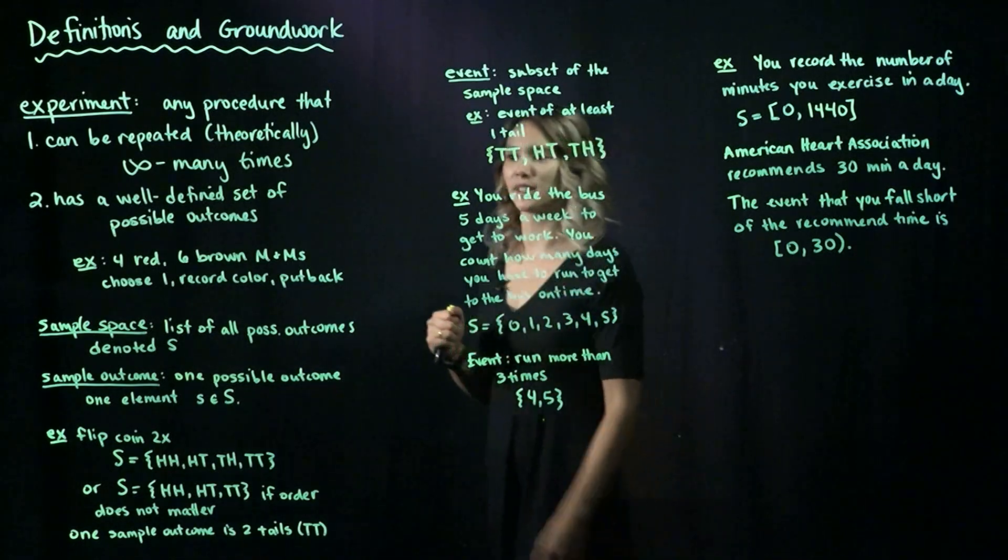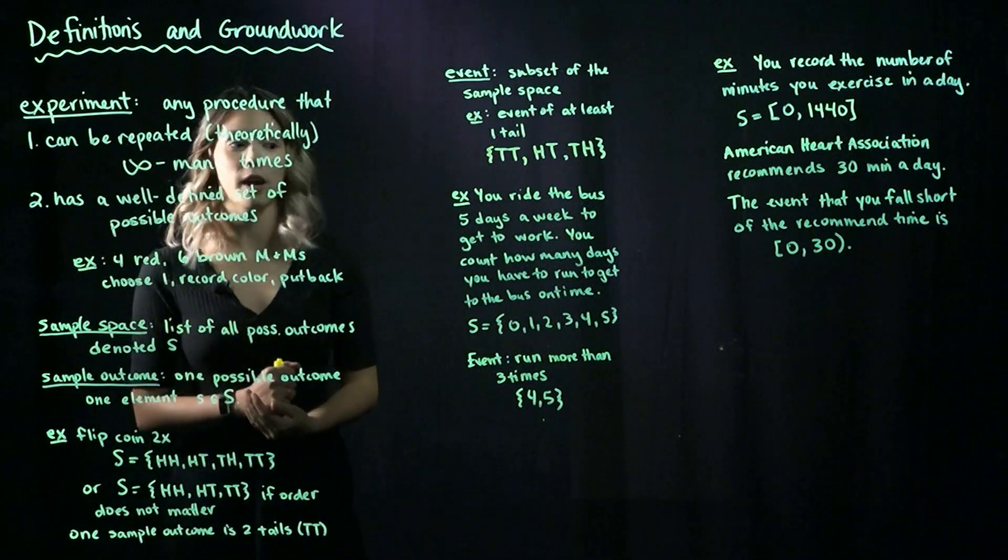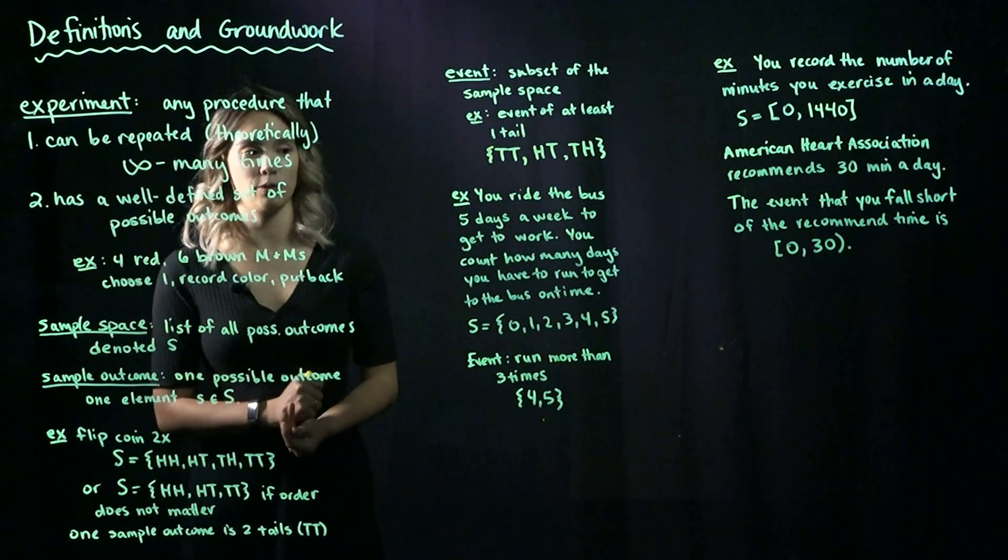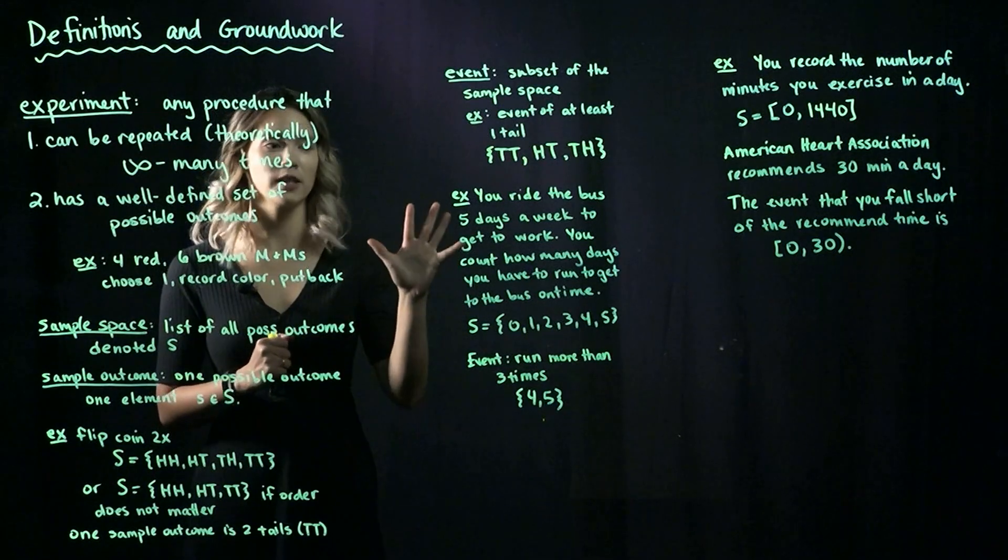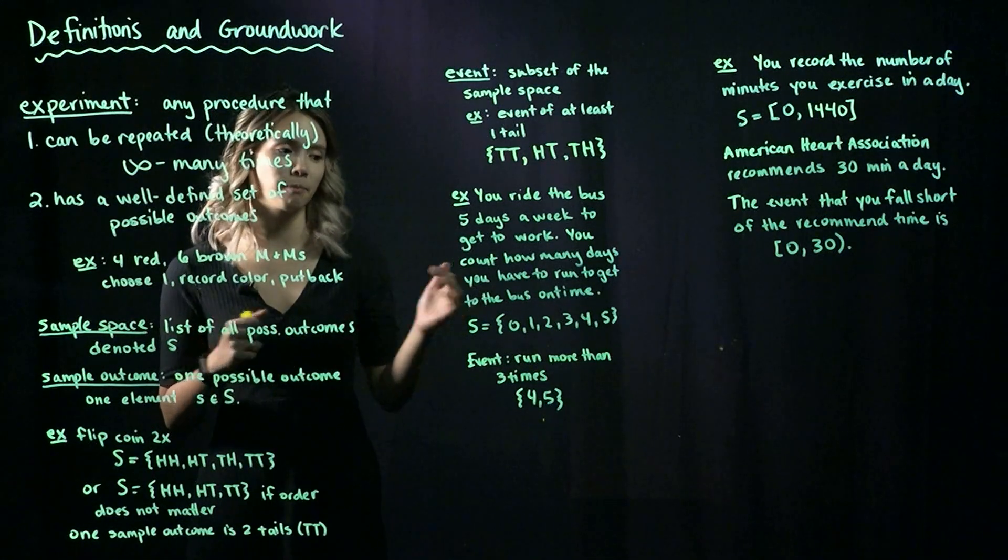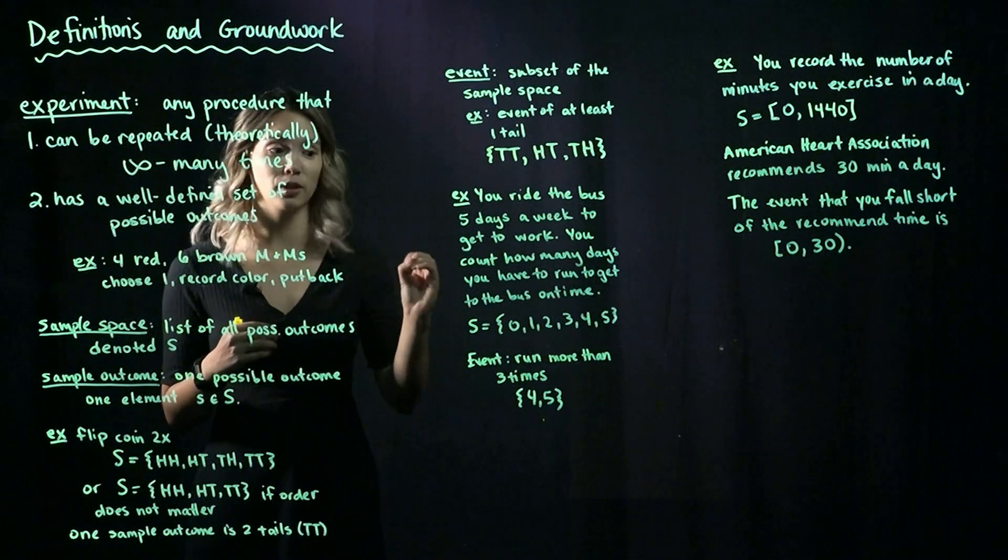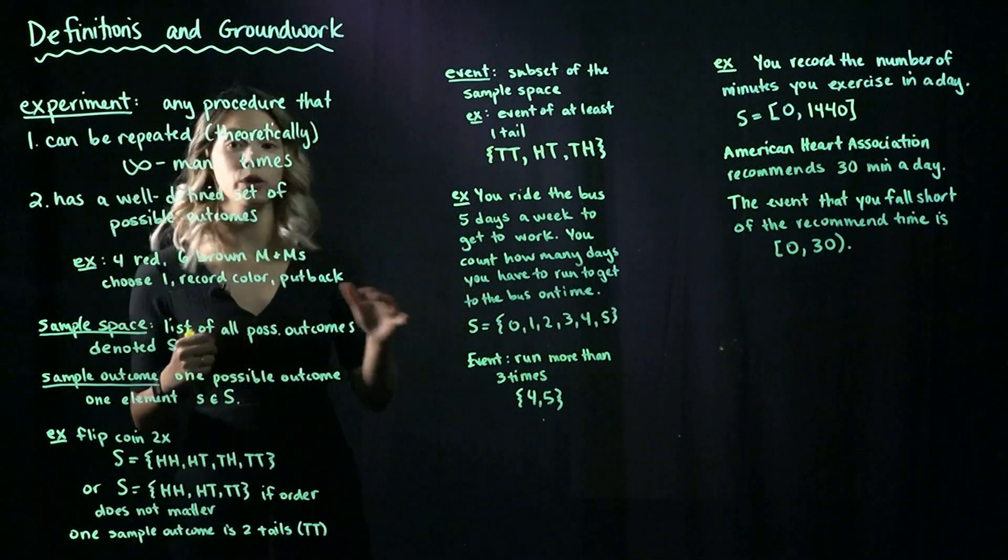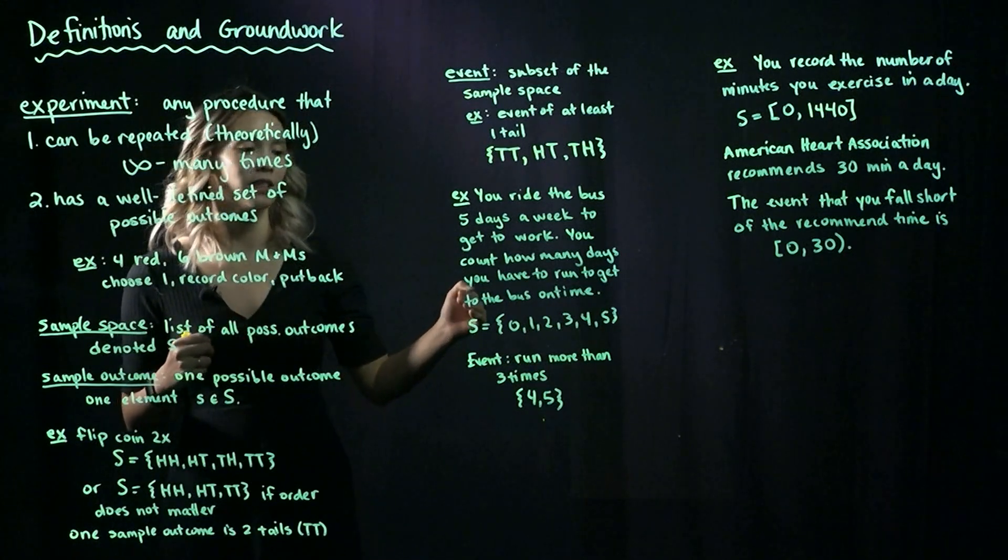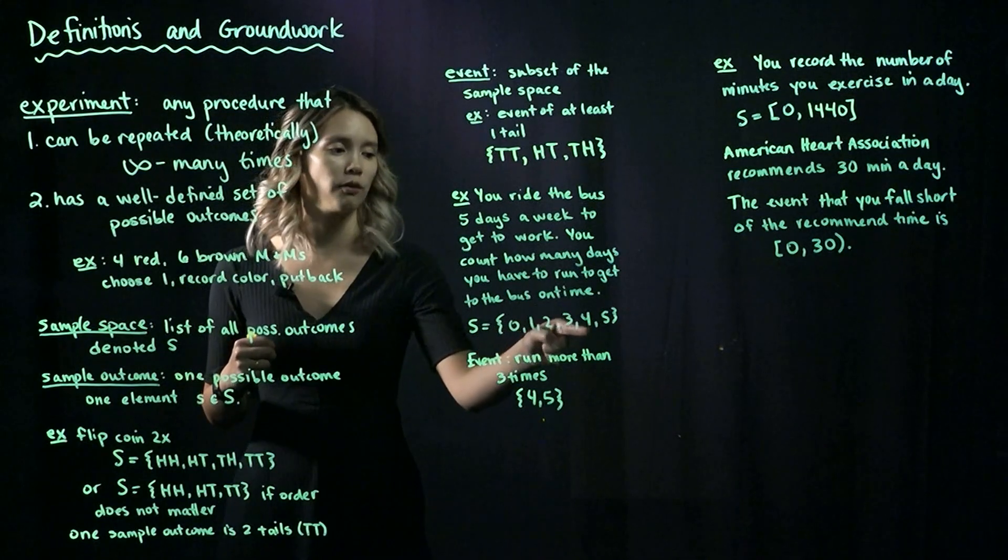Let's look at a couple more examples to really get these into your head. For example, say that you ride the bus to work five days a week. You have five days a week of work and you count how many days you have to run to get to the bus on time. So if you're doing really well, you run zero times, or you could run up to five days a week. So your sample space would be the set 0, 1, 2, 3, 4, 5.